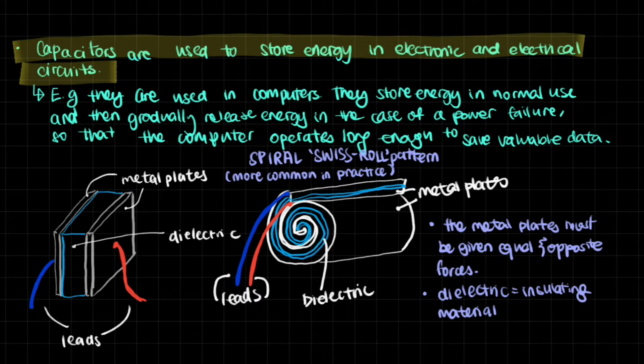So let's take a look at the simplest sort of structure of a capacitor. Now, this is what it is. It's essentially just two metal plates that are connected to leads. They lead them to a power supply, a cell. We can picture that.